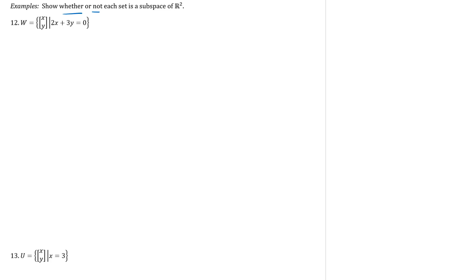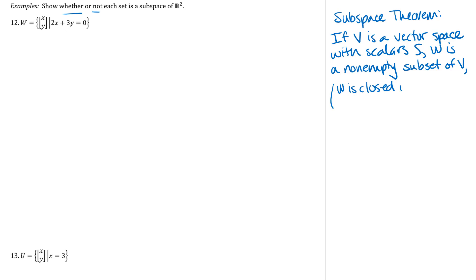So we have that subspace theorem, a very useful theorem. It says that if we have this overlying vector space with a set of scalars and W is a non-empty subset of V, then we can check those two closure properties. So if W has additive closure, W is closed under vector addition and W is closed under scalar multiplication. Provided those things are true, we can conclude that W is a subspace of V with those same scalars.